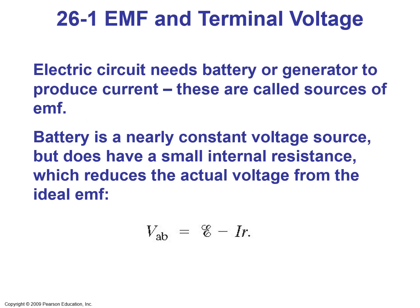An electric circuit needs a battery or generator to produce current. These are called sources of EMF — electromotive force. A battery is a nearly constant voltage source, but does have a small internal resistance, which reduces the actual voltage from the ideal EMF.